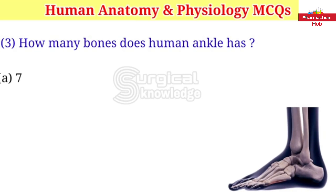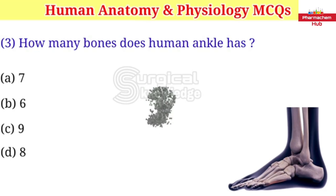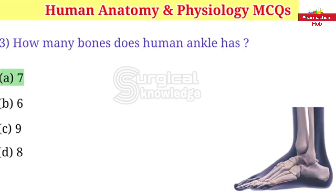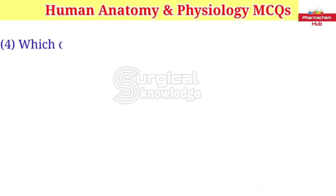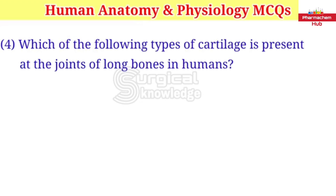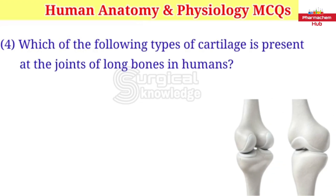How many bones does the human ankle have? A. 7 B. 6 C. 9 D. 8. Right answer is 7.